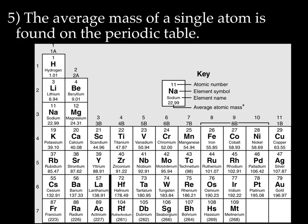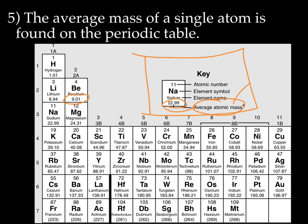The average mass of a single atom can be found on the periodic table. We'll talk next lecture about why we take an average mass. In every periodic table the location could be in a different place, so you always start by looking at the key. Every periodic table will have a key, and this key shows us that the average atomic mass is found at the bottom. For example, the average atomic mass of beryllium is 9.01 AMU.